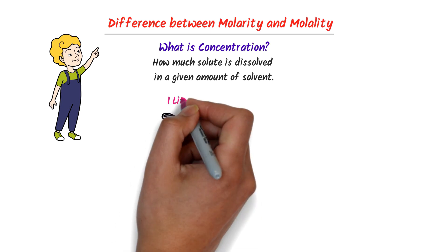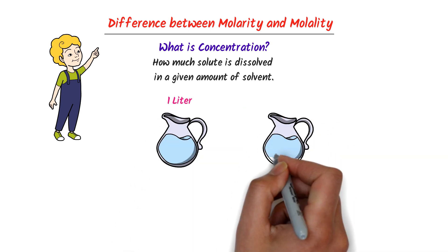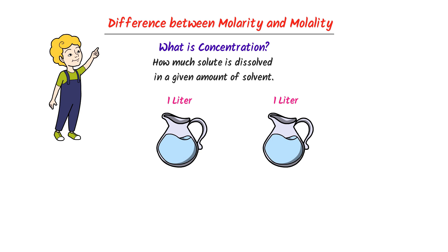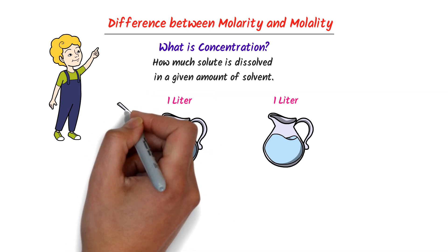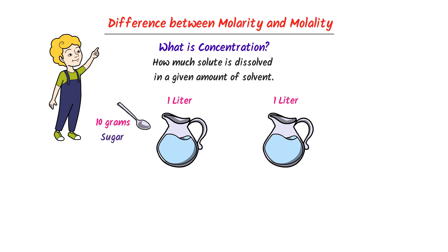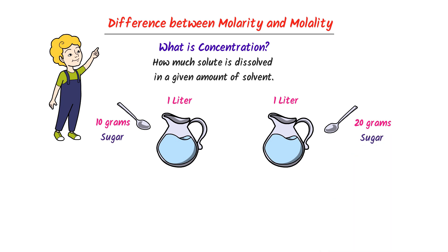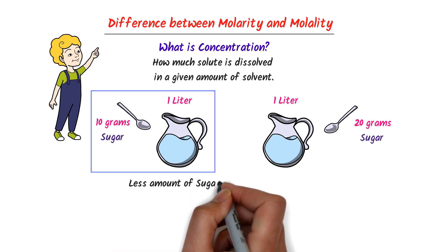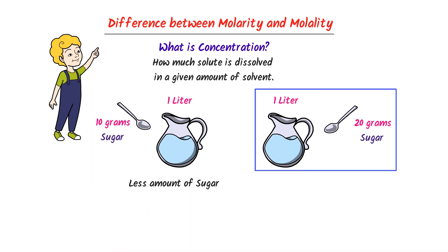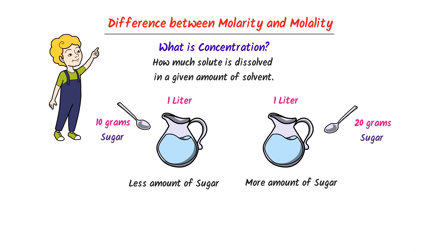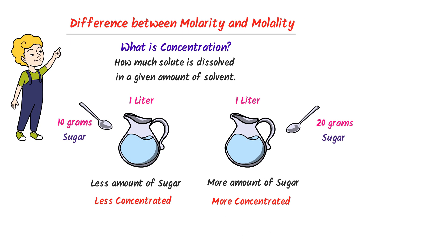For example, consider 1 liter water in this object and 1 liter water in this object. In this 1 liter water, I dissolved 10 grams sugar to form a solution, while in this 1 liter water, I dissolved 20 grams sugar to form a solution. We know that this solution contains less amount of sugar, while this solution contains more amount of sugar. So we say that this is a less concentrated solution and this is a more concentrated solution.